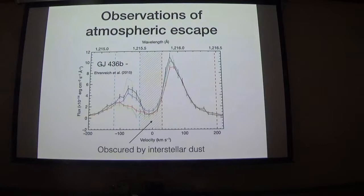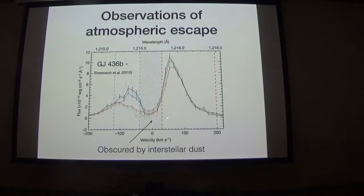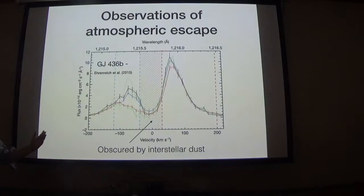Knowing the planetary and stellar masses, you can compute the Roche lobe radius — the region within which material is formally bound to the planet. This 50% obscuration area is well outside the planet's Roche radius. The neutral hydrogen is temporally associated with the planet because obscuration only occurs during transit, but the hydrogen cloud extends well outside the Roche radius. Therefore it's not bound to the planet: it must have come from the planet, but it's no longer bound, meaning it has been lost from the planet.